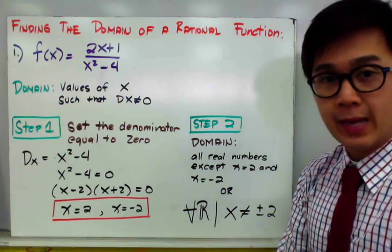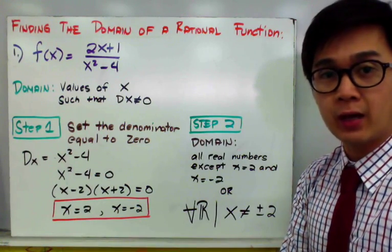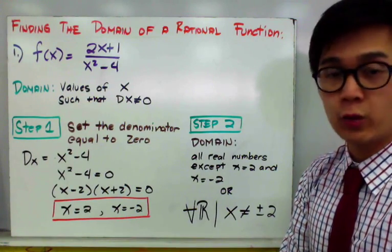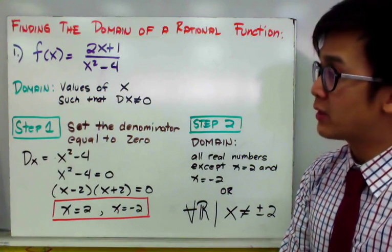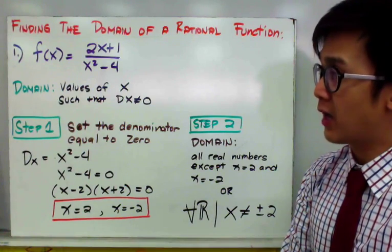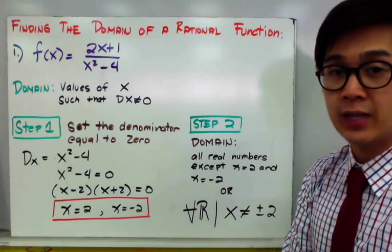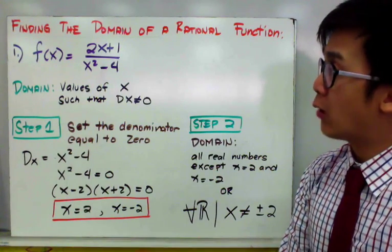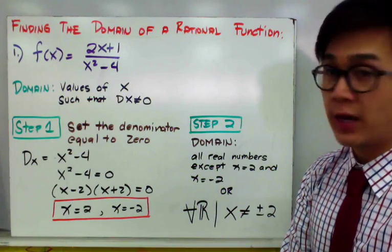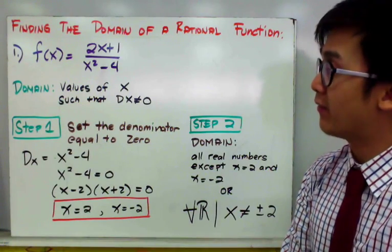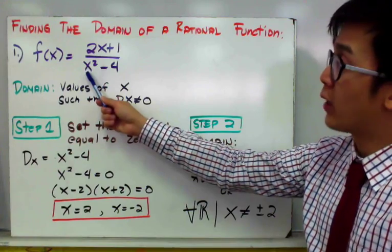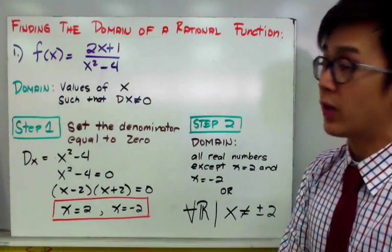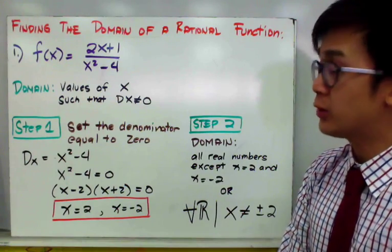For our first example, we need to find the domain of f of x, which is equal to 2x plus 1 all over x squared minus 4. From the definition discussed previously, we know that the denominator of a rational function cannot be 0, otherwise our function will be undefined. To find the domain, we need to find the values of x that make the denominator 0, so we can stay away from those particular values.